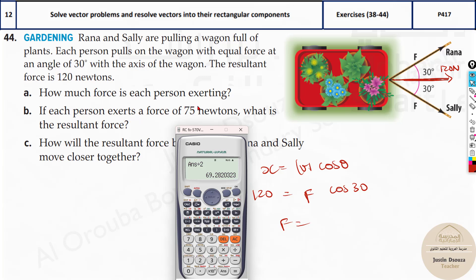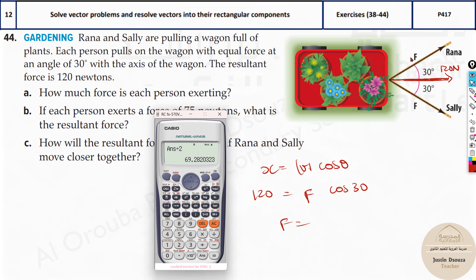And what about the next one? If each person exerts a force of 75 Newtons. So each person is exerting this f value of 75 Newtons. What is the resultant? Now here 75 times cos 30. But this is just the resultant of one person's force. We need to do this times two. Why? Because there are two people. f is given to be 75. But there are two f's. So times two. Now this is the correct answer. It is 129.9, 130 Newtons.